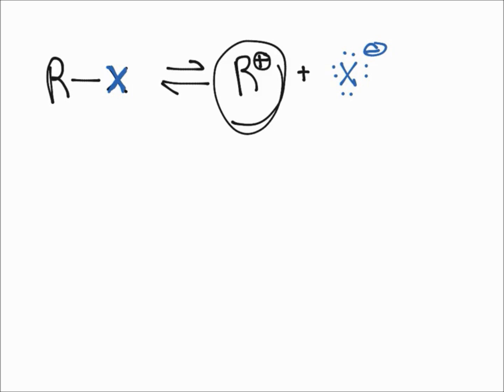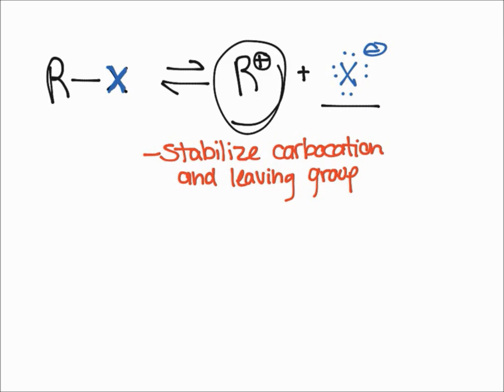Let's think about what type of solvent that we would need. And so our goal of making this SN1 reaction proceed faster is to essentially just stabilize the carbocation and the leaving group, which is this X or halogen that I've drawn right there. So that's our goal.